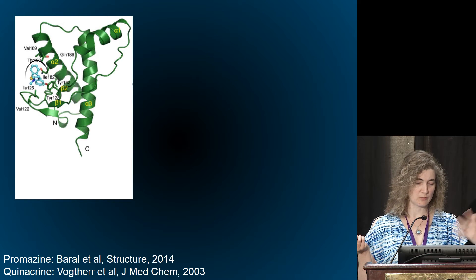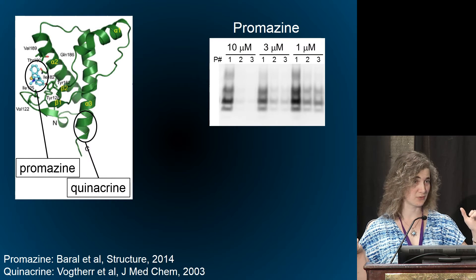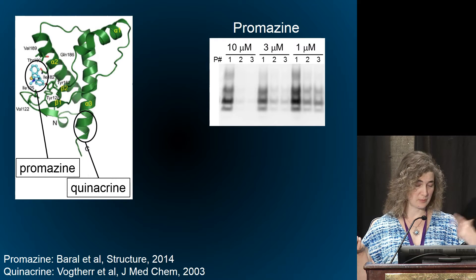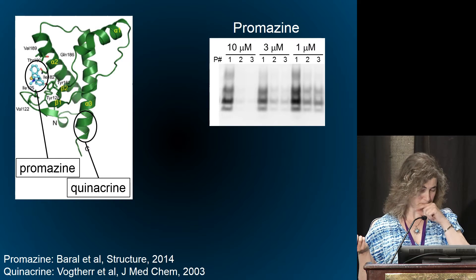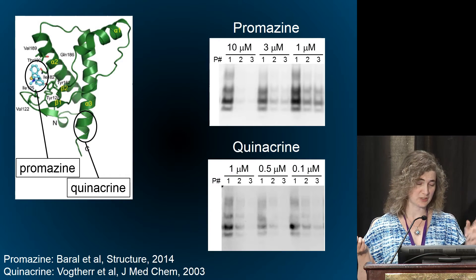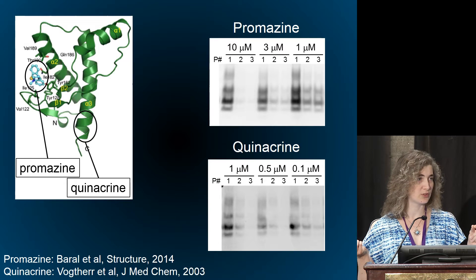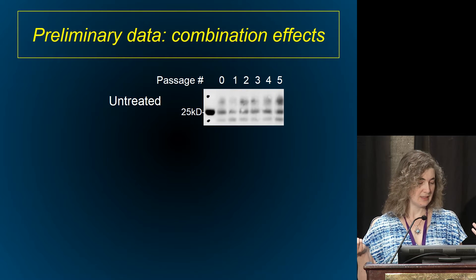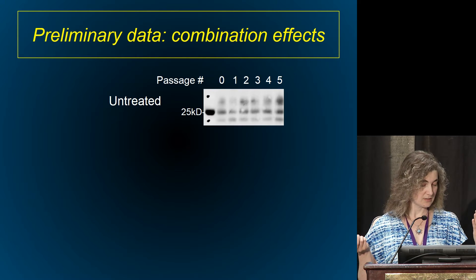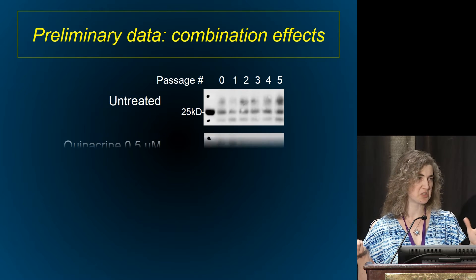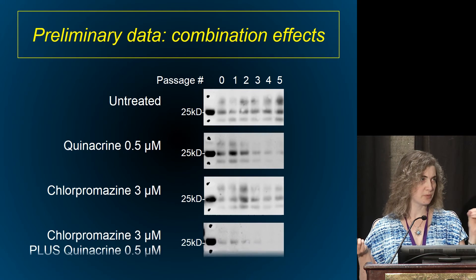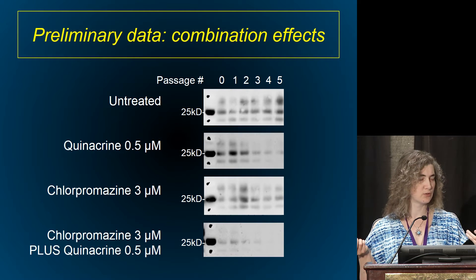Here's some basic data showing promazine's effect. Using western blots at different dosages you can see a loss of prion replication in scrapie-infected cell culture, and quinacrine also has this effect. Look at the dosages though — quinacrine is much more effective than promazine at the same one micromolar dose. Now if we combine them: I have untreated cells, quinacrine or chlorpromazine used at dosages that work a little but not great, and combining them together they work much more efficiently. That's the premise — trying to improve the bang for our buck.